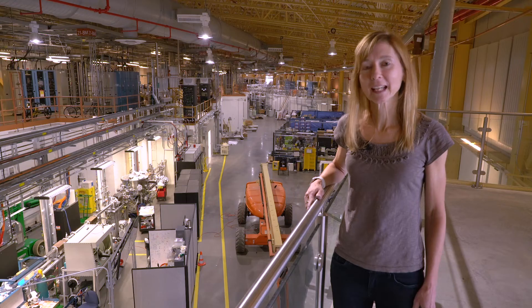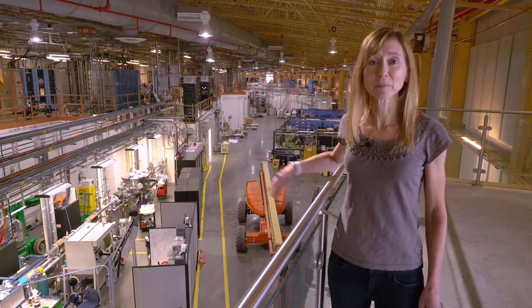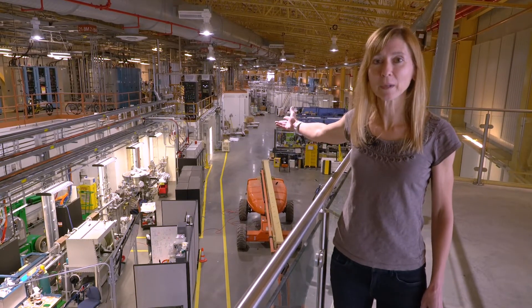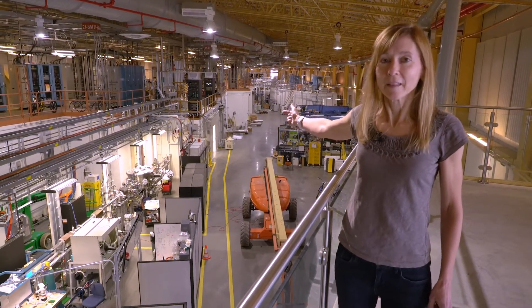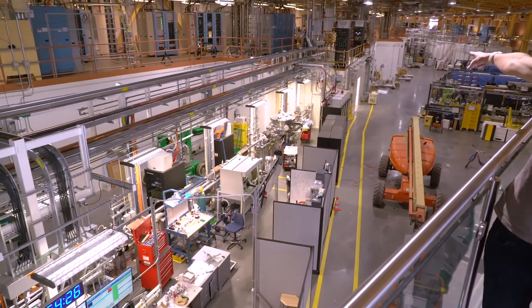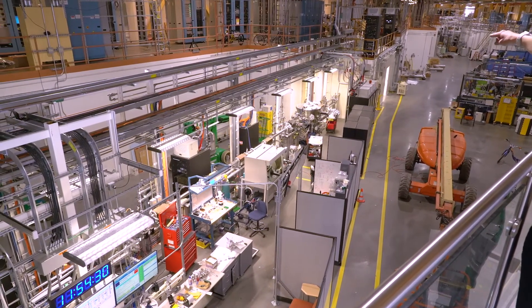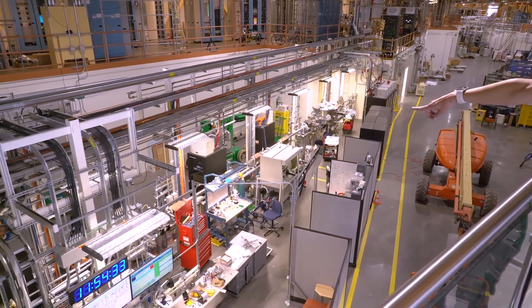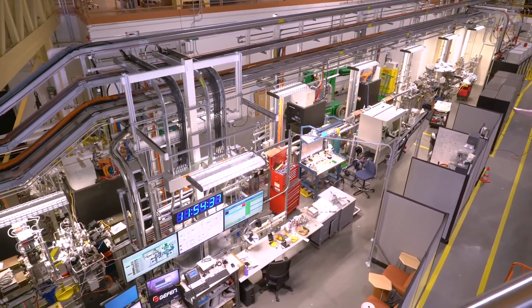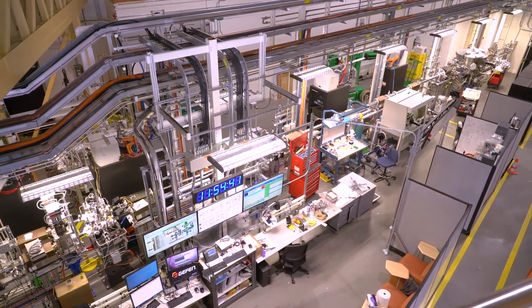So now we're standing up on the balcony above the experimental floor at NSLS-2 and you can see the entire experimental floor behind me. What I'd like to point out up here is actually one of the beamlines from bird's eye view. The beamline starts from the concrete wall which you can see right there and the beamline is the dark metal pipe and inside that pipe is the x-rays which travel all the way down the beamline and eventually down just below me is an experimental station where scientists will actually insert their sample and perform the experiments.